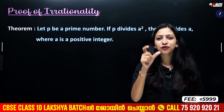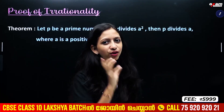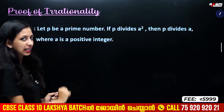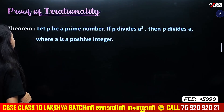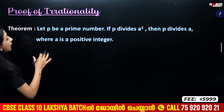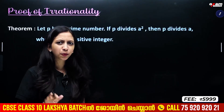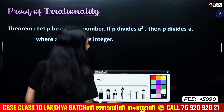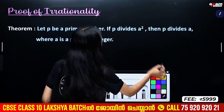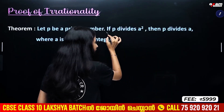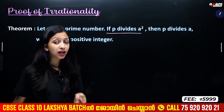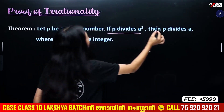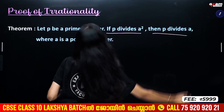We must try to prove it by using our other tools. We need to do this theory. Let me say the prime numbers. This is the prime number. Assume it. If p divides a square, p is a prime number, and a square is divided by a, then p divides a.